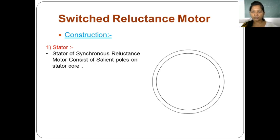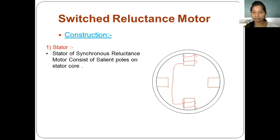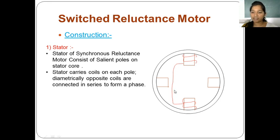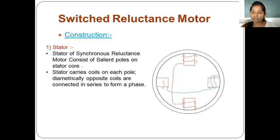The stator carries coils on each pole. Diametrically opposite coils are wound on each pole — if one coil starts at one pole, it ends at the diametrically opposite pole. Adjacent poles carry another phase coil, which also ends at its exactly diametrically opposite pole.